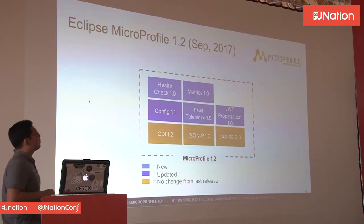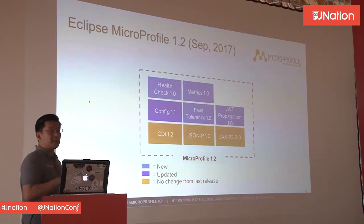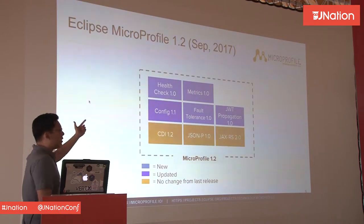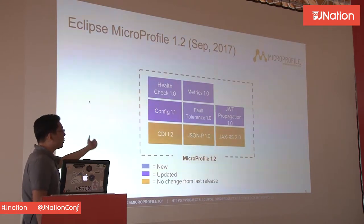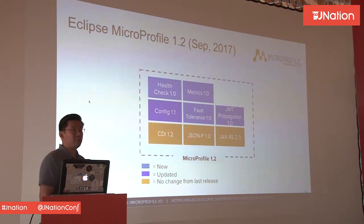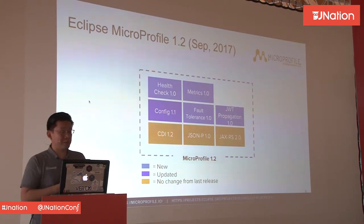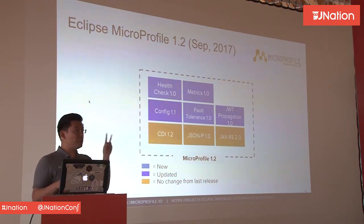MicroProfile 1.2 came in September 2017 — much faster. We had the Health Check API, Metrics API, Config API 1.1, Fault Tolerance API, and JWT propagation for security context propagation. So we have all of these in MicroProfile 1.2.